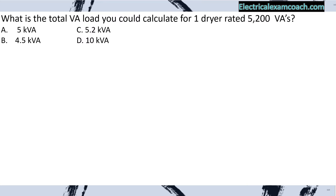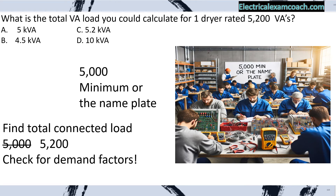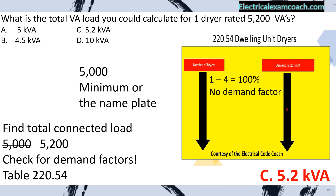What is the total VA load you would calculate for one dryer rated at 5,200 VAs? We find our total connected load using the 5,000 VA minimum or the nameplate, whichever is larger. In this case the nameplate is larger, so we select 5,200 VAs. We then check table 220.54 and find that for one to four dryers it's calculated at 100% — there is no demand factor. Answer: C.